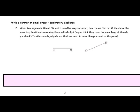Given two segments, AB and CD, which could be very far apart, how can we find out if they have the same length without measuring them individually? Do you think they have the same length? How do you check? In other words, why do you think we need to move things around on the plane?